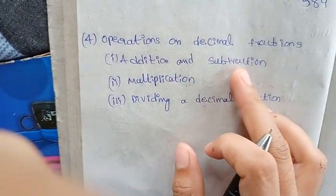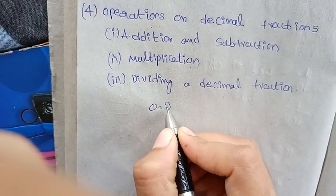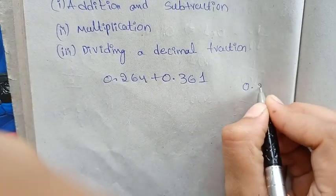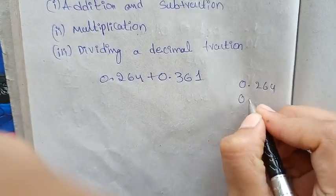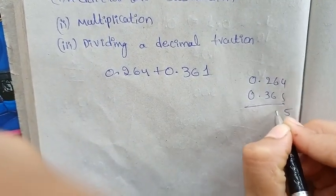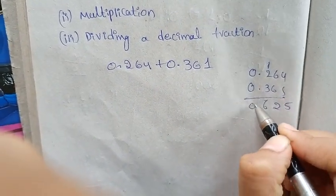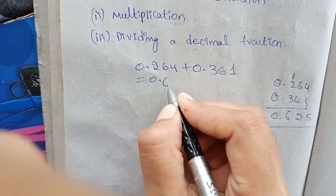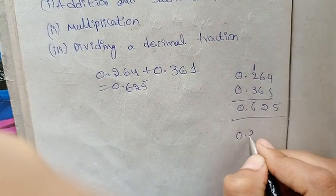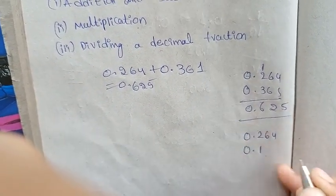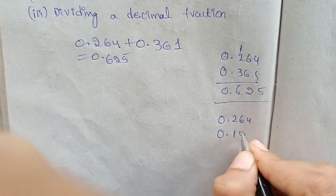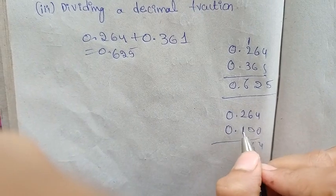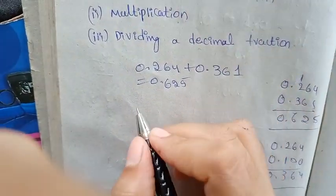We have addition and subtraction. Now suppose 0.264 plus 0.361. You can add 0.361. Now we have 0.625. You can add 0.1, you can add 0.625, and you will add 0.214. Let's add 1.264. So we have to add and get 0.364. That's it.